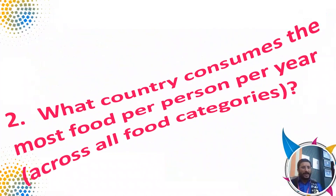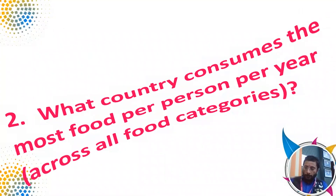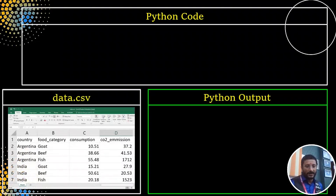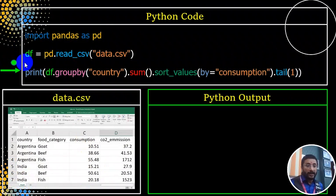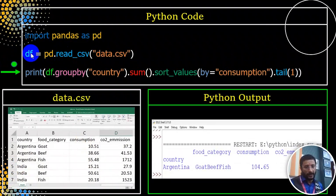You can use this for a data science project. What country consumes the most food per person per year? If you use any other country, you can use all the food categories. This is the CSV file — it has goat, beef categories. You can look at the consumption. You can use the Pandas library, read the CSV file into a DataFrame. We will use DataFrame.groupby country.